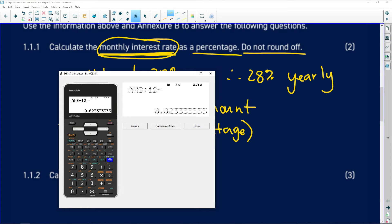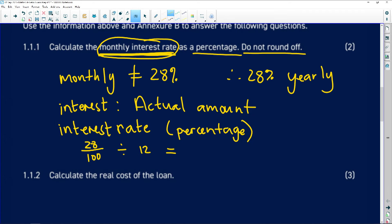So my monthly interest rate, let's see how many threes I have there. I've got one, two, three, four, five, six, seven threes. So that's 0.02333...%. That's going to be your interest rate for the month as a percentage.